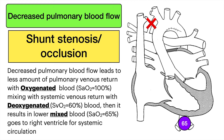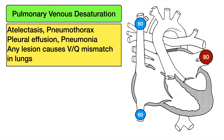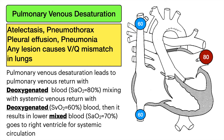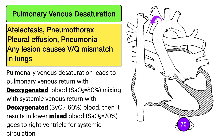Pulmonary venous desaturation — due to atelectasis, pneumothorax, effusion, pneumonia, or any lesion causing V/Q mismatch in the lungs — leads to deoxygenated pulmonary venous return at sat 80% mixing with systemic venous return at sat 60%, resulting in a lower mixed sat of 70% going to the ventricle for systemic circulation, which becomes the systemic arterial saturation of 70%.